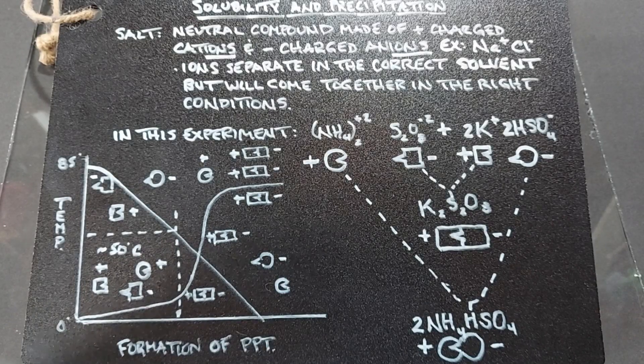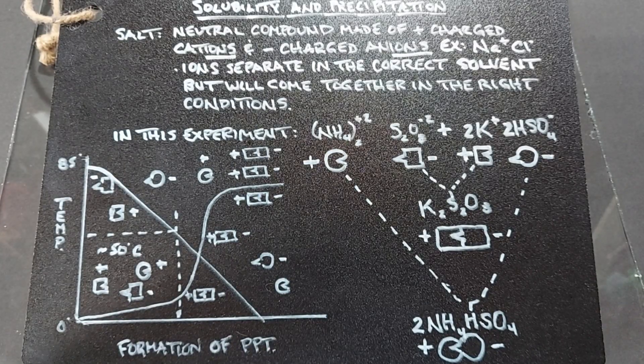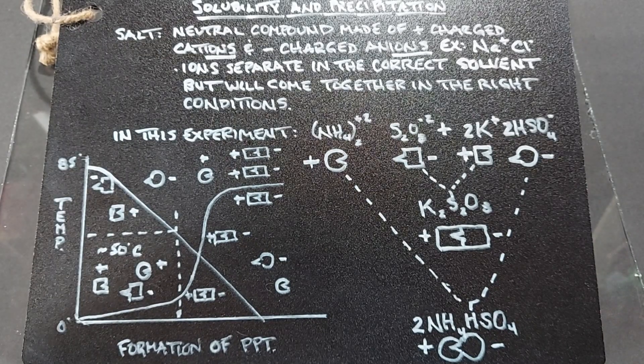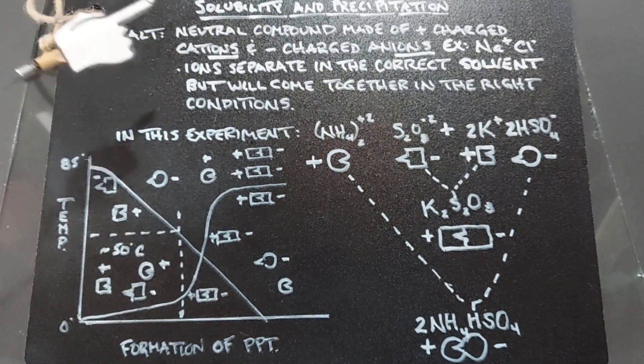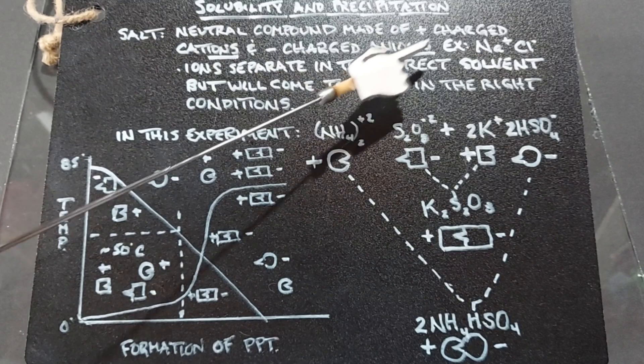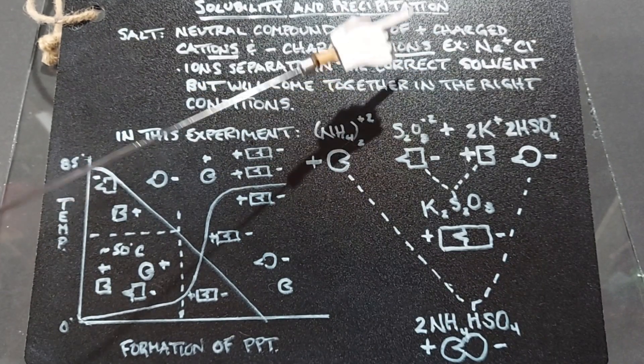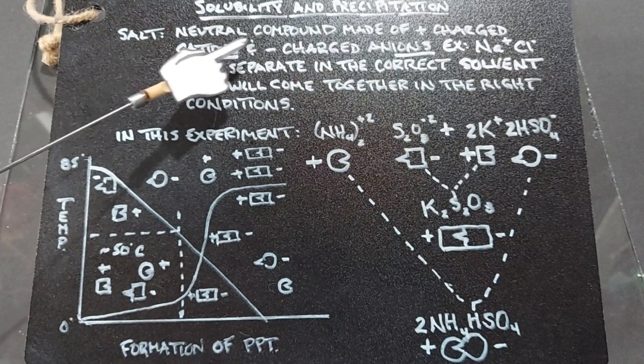We just saw the potassium persulfate come out of solution and gather on the bottom of that beaker. So I wanted to go over the solubility and precipitation in this experiment and just explain a few things. It's pretty basic, but I think it's worth going over. Before we do that, I'm going to define a salt. A salt is a neutral compound made of a positively charged cation and a negatively charged anion. So we can see in both of these words, there's a word ion. So we're dealing with ions.